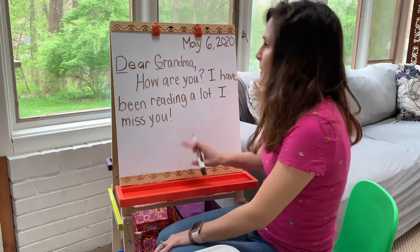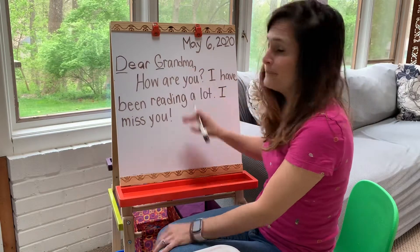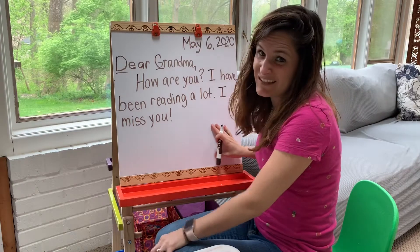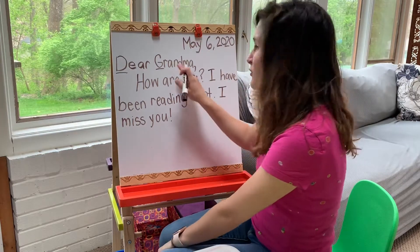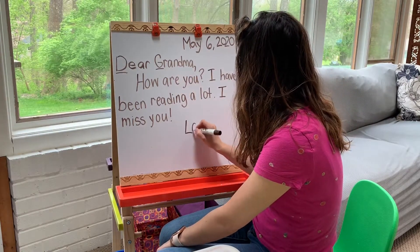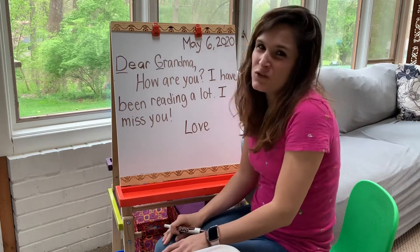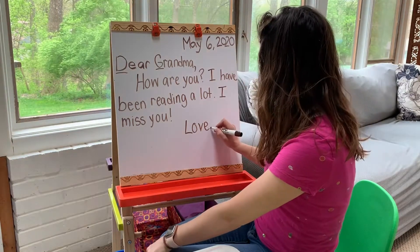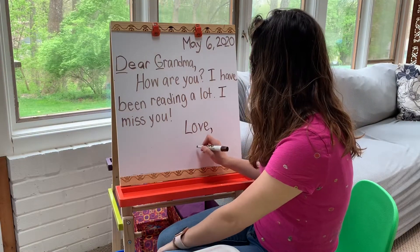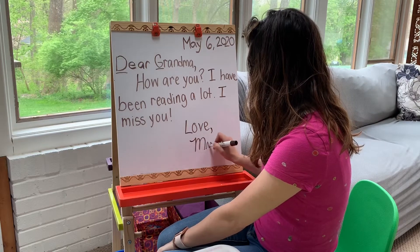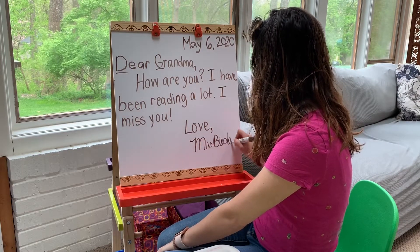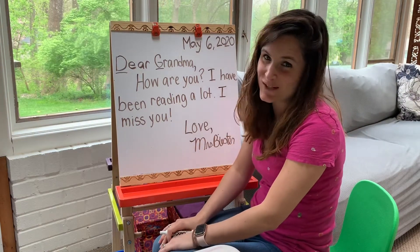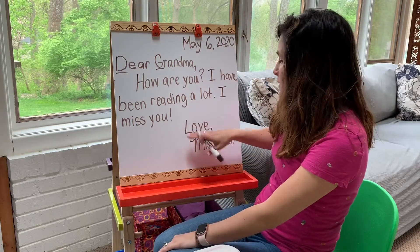I have my date, I have my greeting, and this is the body of my letter. Now I'm going to put my closing and signature. Since it's my grandma, I'm going to use the closing word 'love.' You can also use words like 'from' or 'sincerely,' but I'm going to use 'love' because I love my grandma. And I'm going to sign my name. I did a little cursive — you don't have to do that, you can just write your name. But there's my closing and my signature.